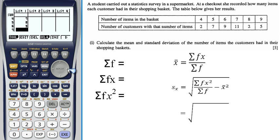And then use the right arrow to go to the next column and I'm going to type in all my frequencies. So, 2, 7, 9, 11, 2, and 5.